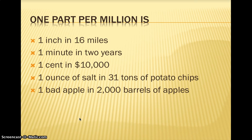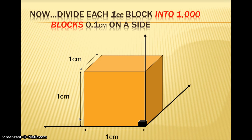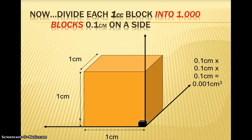Now try to brainstorm what one part per billion could be. If we want to figure out what one part per billion is, we need to take a one cubic centimeter block and cut that into a thousand blocks to give us one part per billion. So 0.1 centimeter on each side would be one block — one part per billion of this.